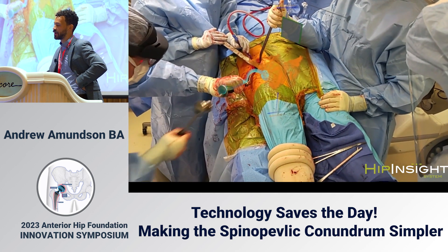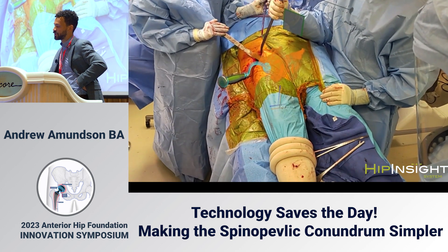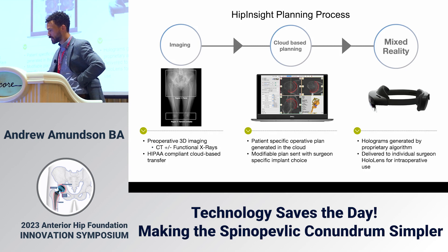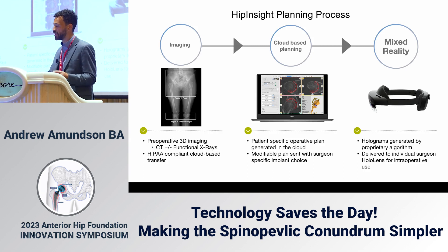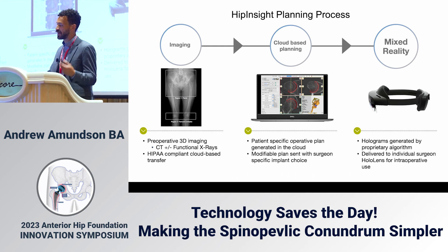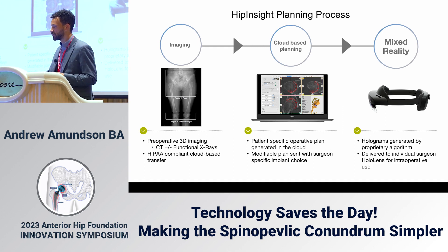The impactor hologram is in the planned anteversion and inclination — it's really just line it up and impact. The Hip Inside planning process starts with a CT, which is uploaded; we create 3D models of the pelvis and femur, plan component sizing and positioning, adjust for the patient's pelvic tilt, incorporate functional images if available, then upload that back to the website for the surgeon or rep to download and use in surgery.